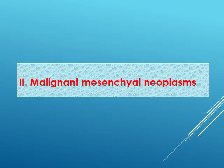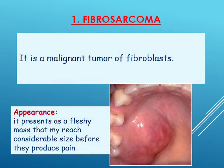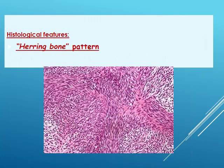The second category is malignant mesenchymal neoplasms. The first is fibrosarcoma — a malignant tumor of fibrous tissue. Its appearance is a fleshy mass that can cause pain over time as it enlarges and exerts pressure on vital structures. Under the microscope, it shows a herring bone pattern, where groups of spindle-shaped cells are arranged in alternating directions, resembling the skeleton of a herring.